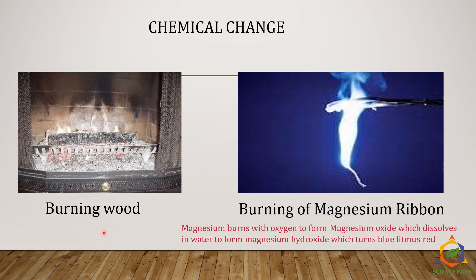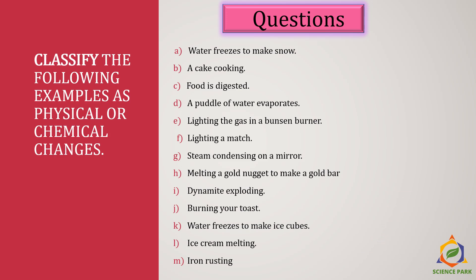Burning of wood and burning of magnesium ribbon are also examples of chemical changes. Magnesium ribbon burns in air or in oxygen to form magnesium oxide, which dissolves in water to form magnesium hydroxide. Magnesium hydroxide is basic in nature because it turns red litmus into blue color.